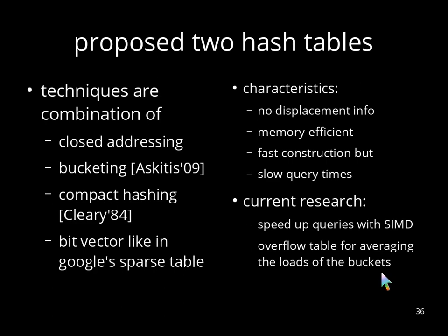So in total, we have proposed two new hash tables, and the techniques we used are closed addressing, bucketing, compact hashing, and a bit vector like in Google's sparse hash table. The characteristics are that we don't need to store the displacement information, we are memory efficient, our constructions are fast, but our queries are a little bit slow. And what we want to focus on is to accelerate the query times by using SIMD instructions, and to use an overflow table for averaging the loads of the buckets. And that's all. Thank you for watching.